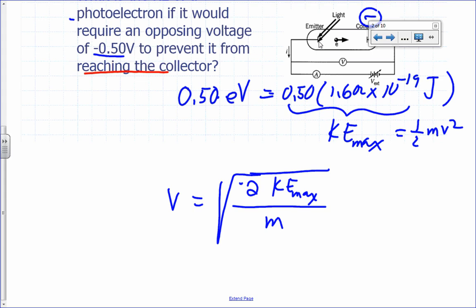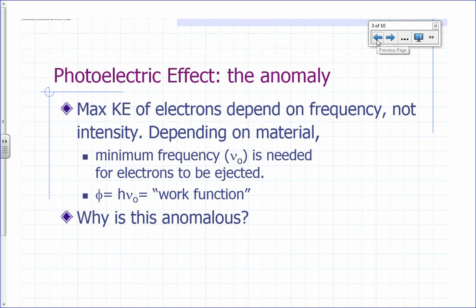The negative voltage is going to slow the electrons down so they won't be able to complete the circuit — they're going to barely make it and be turned around. So what's the anomaly here? It turns out that the maximum kinetic energy of the electrons that are ejected depends on the frequency but not on the intensity.